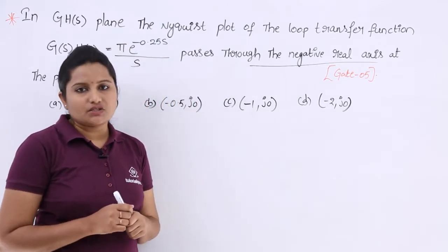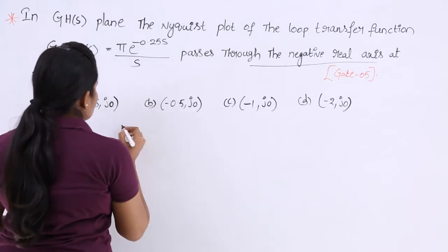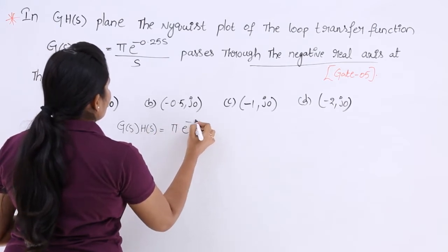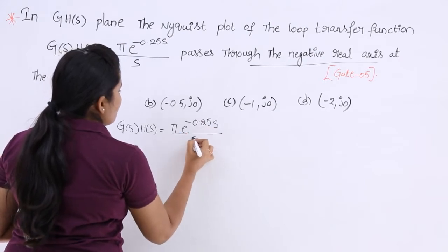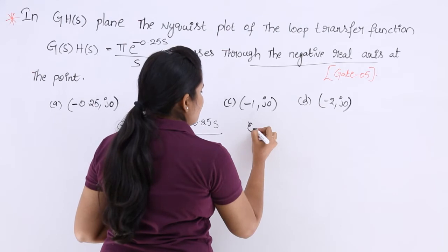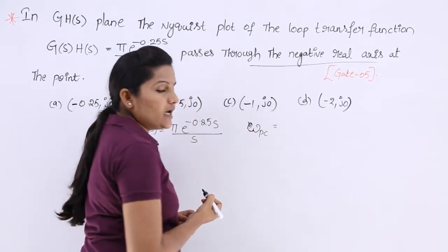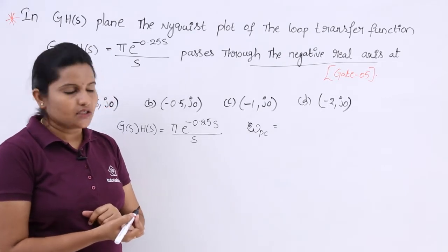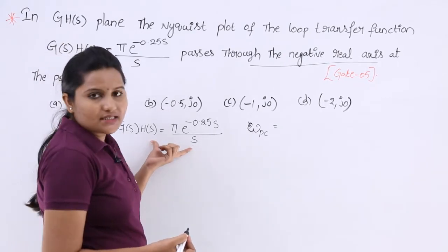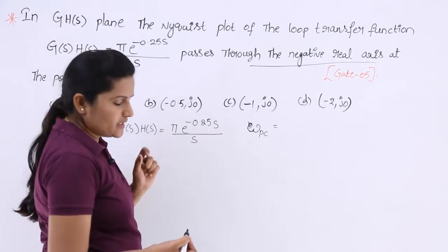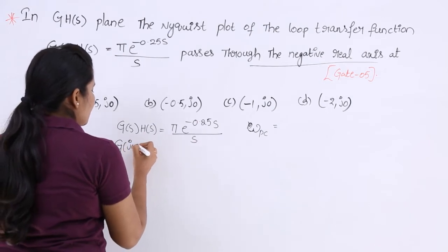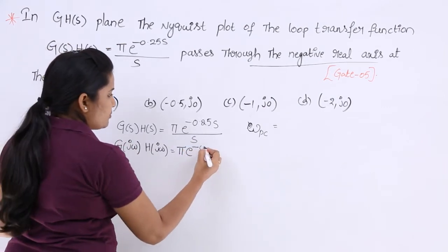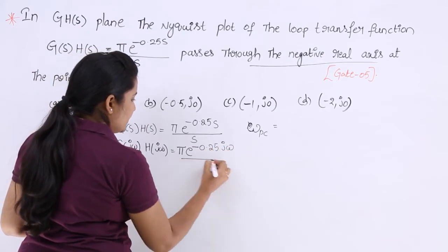I am going to calculate the phase crossover frequency. For that, I am going to consider G(s)·H(s), which is equivalent to π·e^(-0.25s)/s. Phase crossover frequency is the frequency at which the phase is equal to minus 180 degrees. That is why I want to substitute ω_pc, so I am going to consider the expression in terms of jω: G(jω)·H(jω) = π·e^(-0.25jω) / (jω).